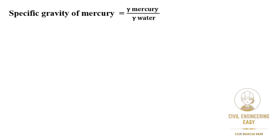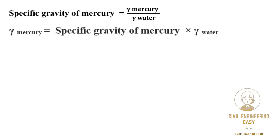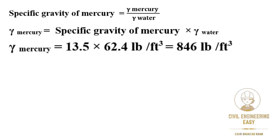The specific gravity of mercury is equal to the specific weight of mercury divided by the specific weight of water. Rearranging the equation, the specific weight of mercury equals the specific gravity of mercury multiplied by the specific weight of water. With specific gravity of mercury as 13.56, multiplied by 62.4 pounds per cubic feet, we get 846 pounds per cubic feet as the specific weight of mercury.